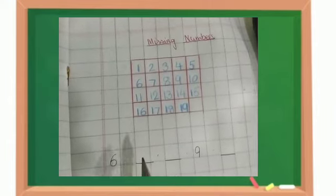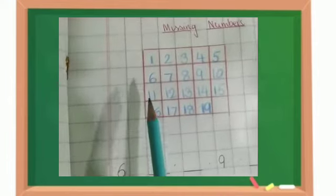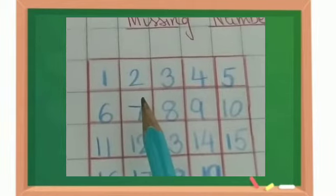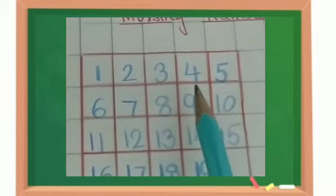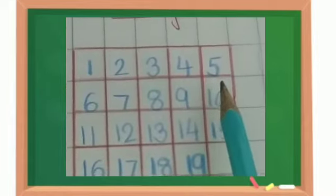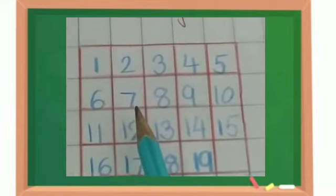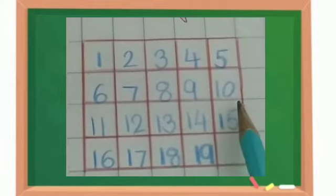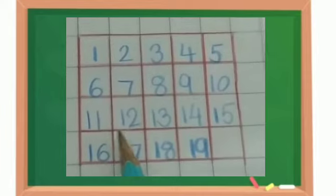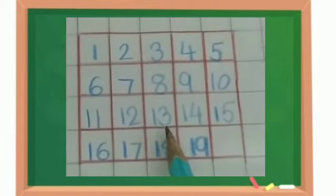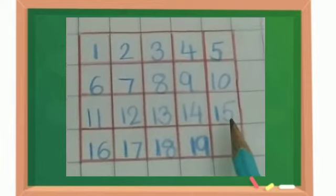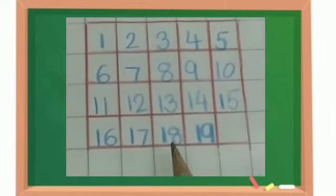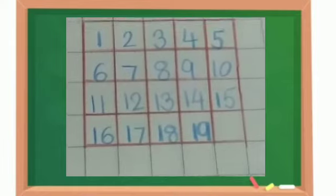So before that, let us count these numbers in this box. Let us count these numbers: 1, 2, 3, 4, 5, 6, 7, 8, 9, 10, 11, 12, 13, 14, 15, 16, 17, 18, 19. Right children?